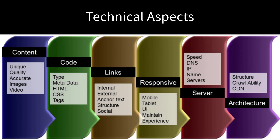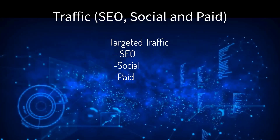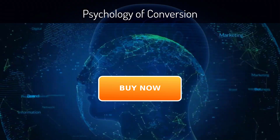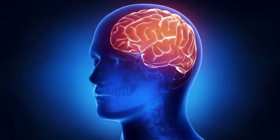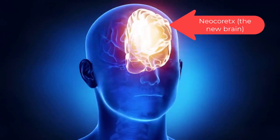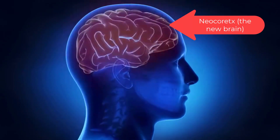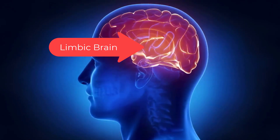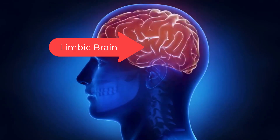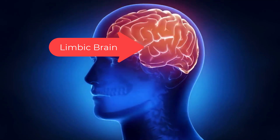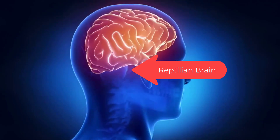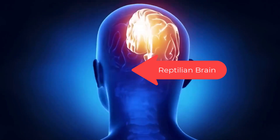Of course, all online marketing must have three elements in alignment: the technical aspects — servers, layout, code structure — the traffic: SEO, social, and paid, and the psychology of conversions. Your brain has three basic layers and only one real decision maker. The neocortex thinks and processes rational data. The limbic brain feels emotions and is our instinct for fight or flight response.